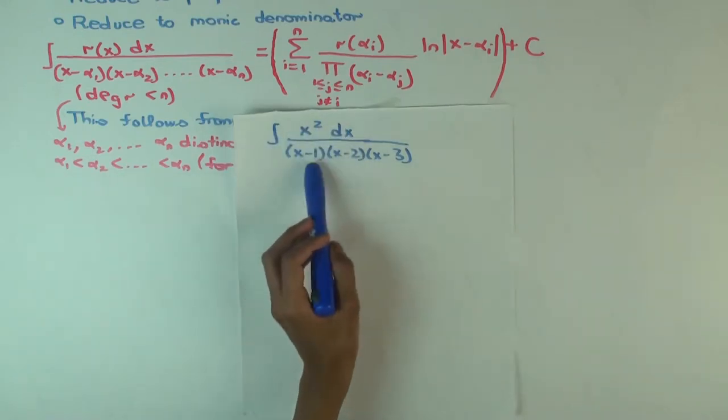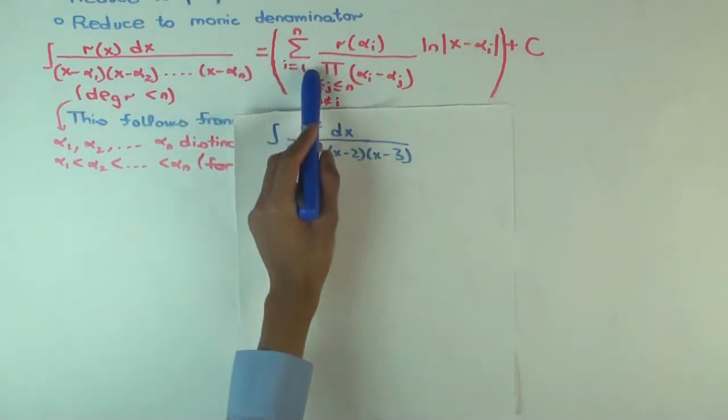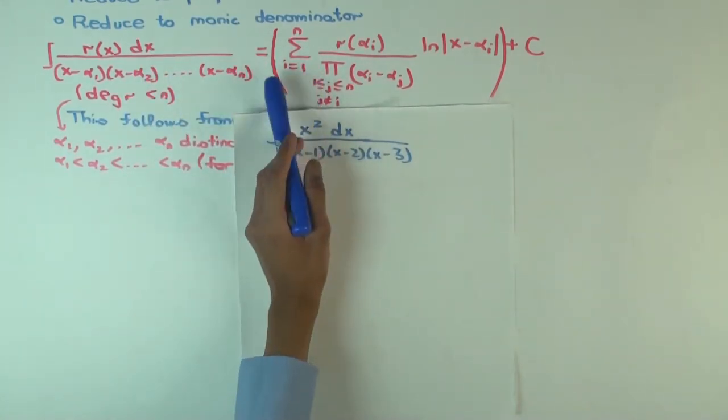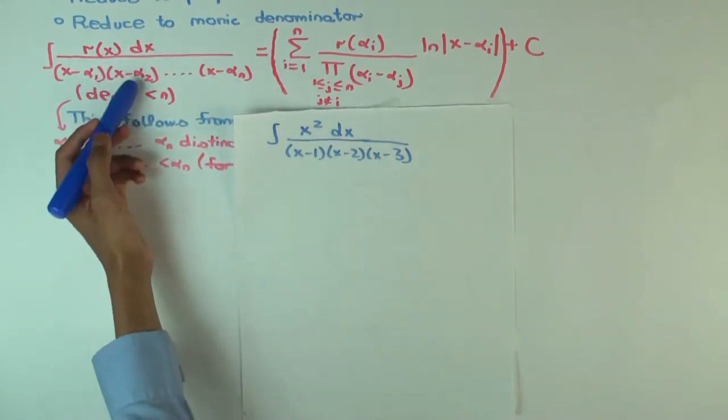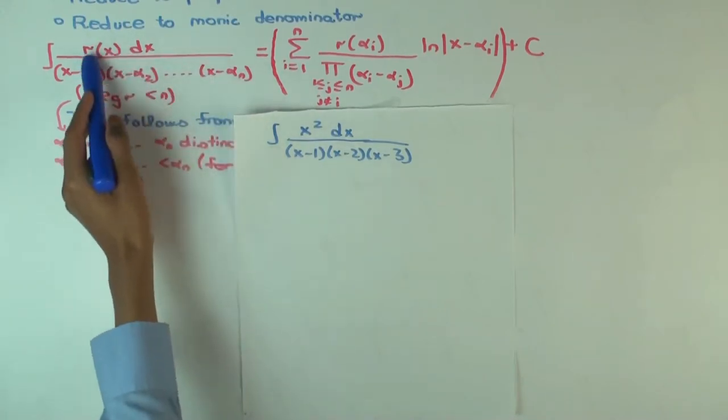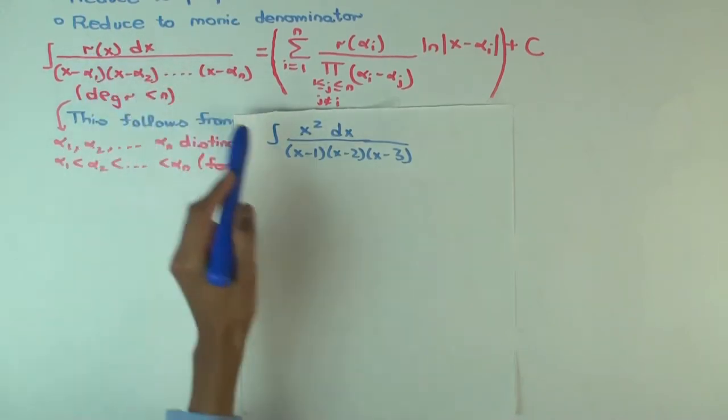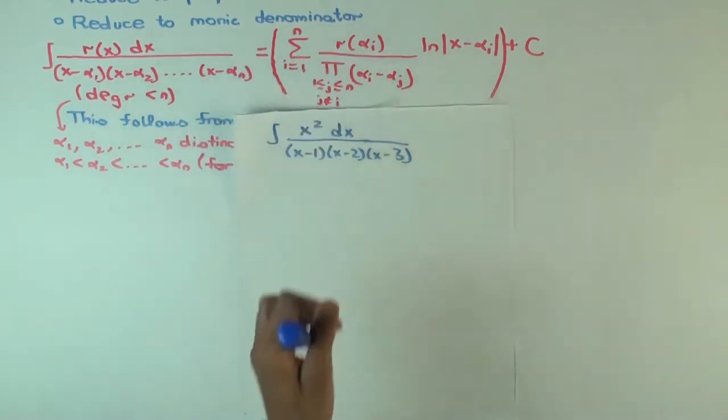So we have to do this integration. And I want to use this formula here, one in red. So this matches the criteria here. You have distinct values alpha 1, alpha 2, alpha n. You have the numerator polynomial has smaller degree than 3, which is n here. And so we can try to use this formula.